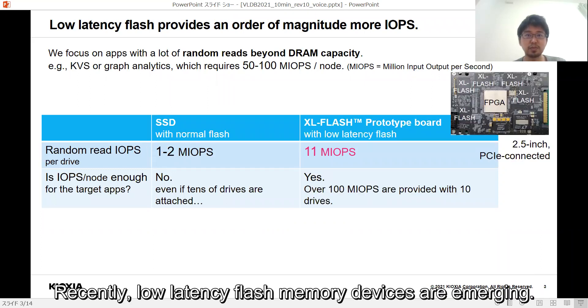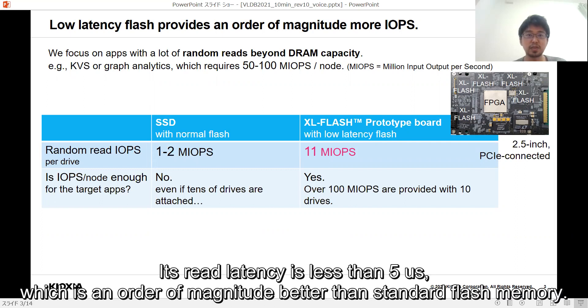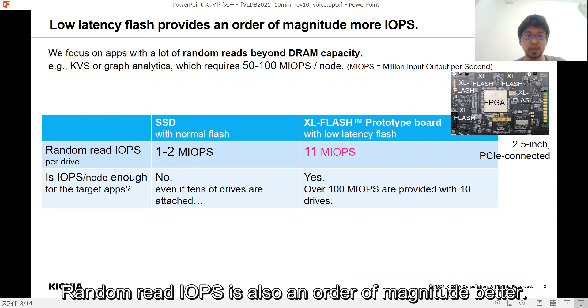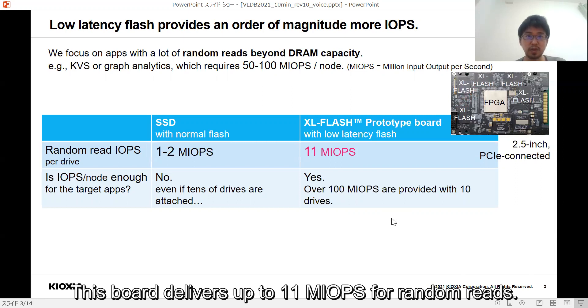Recently, low-latency flash memory devices are emerging. For example, Kyokishare developed a low-latency flash named XL-FLASH. Its read latency is less than 5 microseconds, which is an order of magnitude better than standard flash memory. Random read IOPS is also an order of magnitude better. In this talk, we use a prototype board using the low-latency flash. This board delivers up to 11 million IOPS for random reads.